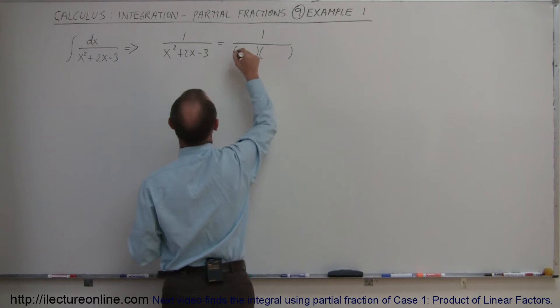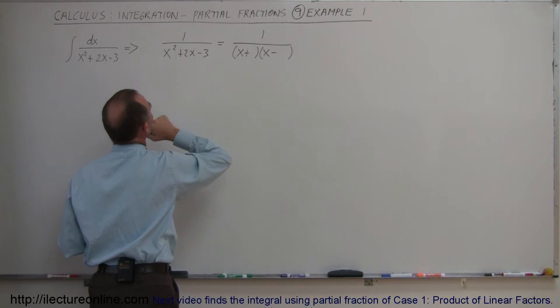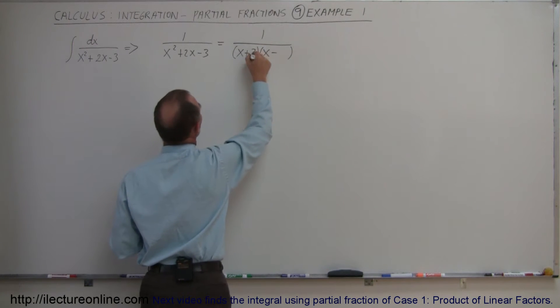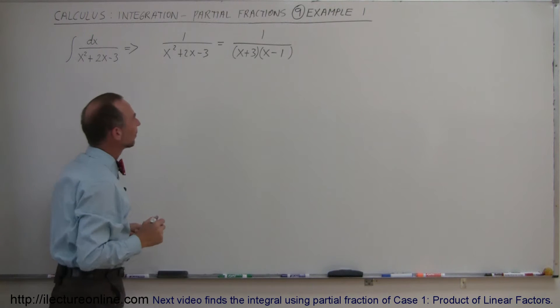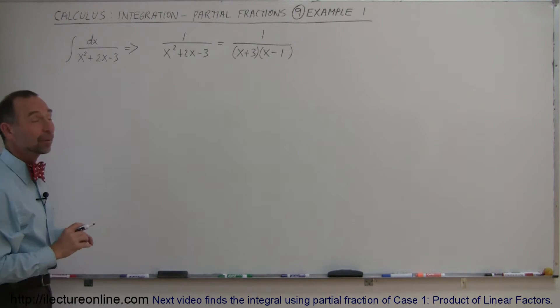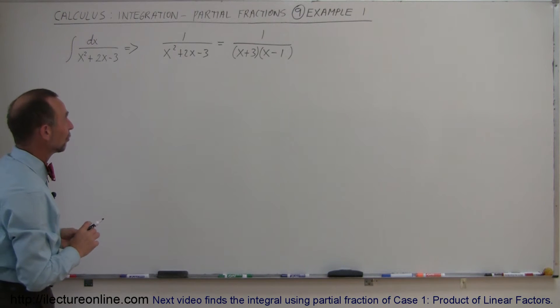Hopefully it's factorable, so we have an x and an x, we have a plus and a minus. When I multiply I get a negative 3, when I add I get a positive 2. It looks like a plus 3 minus 1 would do the trick. Let's see here, minus 3, yep that works. So that's the factored form of the denominator.